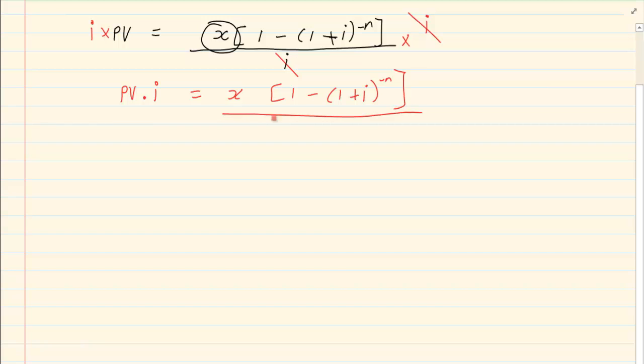Then we would divide it by 1 minus (1 plus i) to the power of minus n. So the entire thing can cancel out. But what you do on one side you must do on the other side.